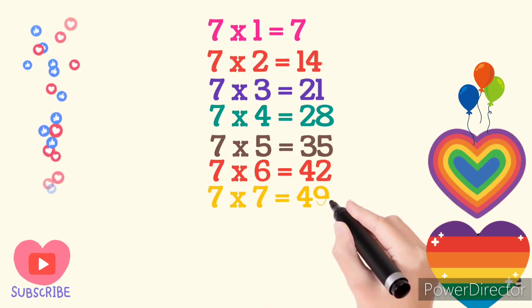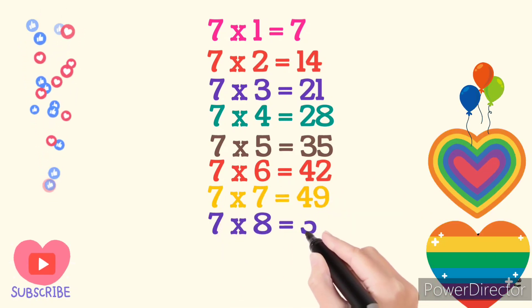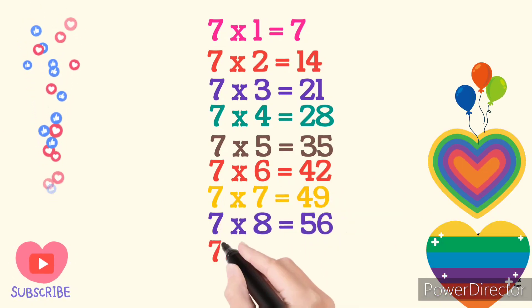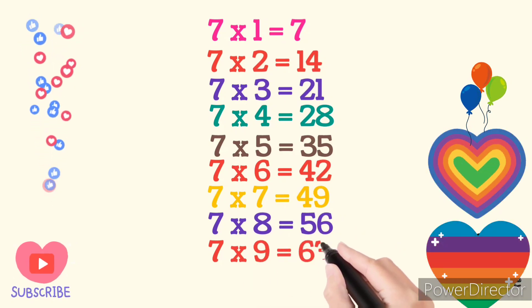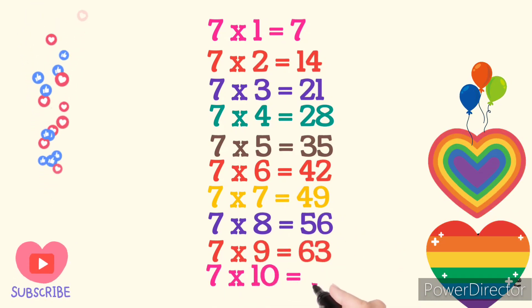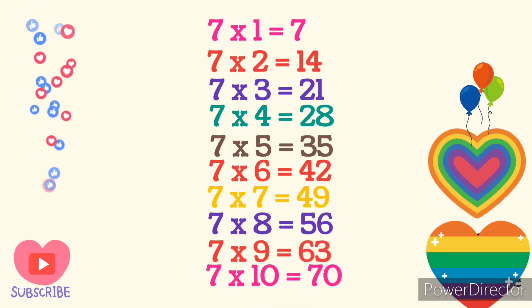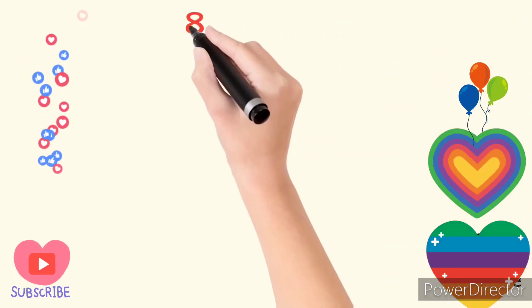7 times 8 are 56. 7 times 9 are 63. 7 times 10 are 70. Table of 8.